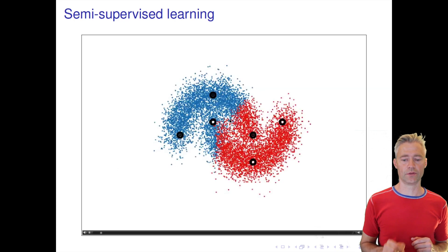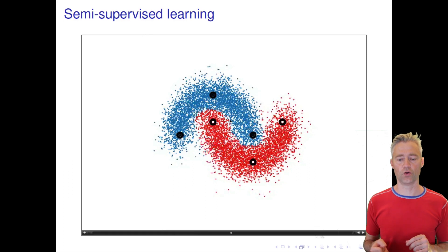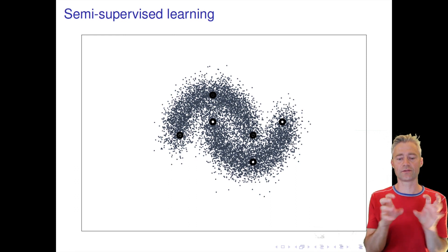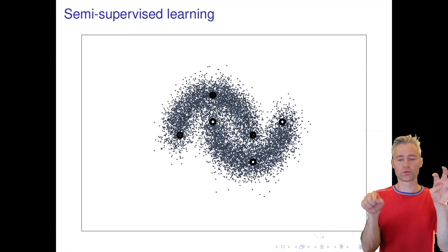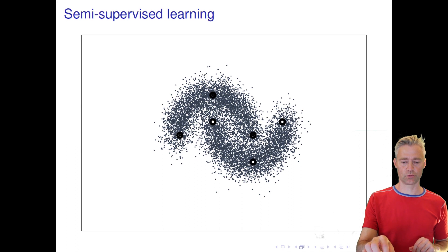If we run our method with these auxiliary variables I talked about before, we can actually learn this labeling like this. So this is really what we want to do. We explore information about the density - that there's actually two disjoint densities in the data - and that gives us information about what regions should be connected also with respect to the labels.